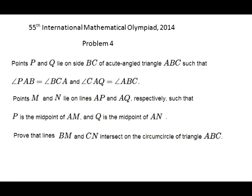Points M and N lie on lines AP and AQ, respectively, such that P is the midpoint of AM, and Q is the midpoint of AN. Prove that lines BM and CN intersect on the circumcircle of triangle ABC.